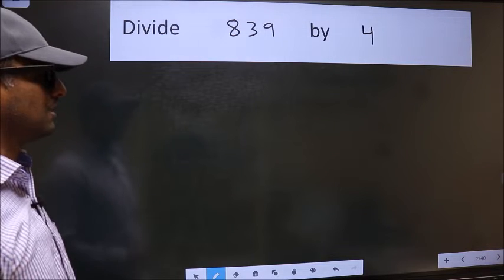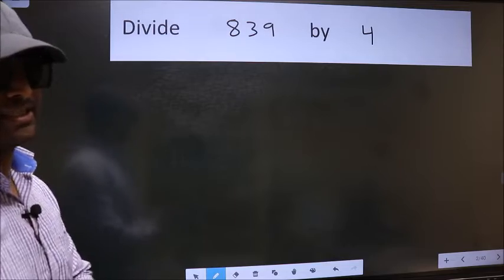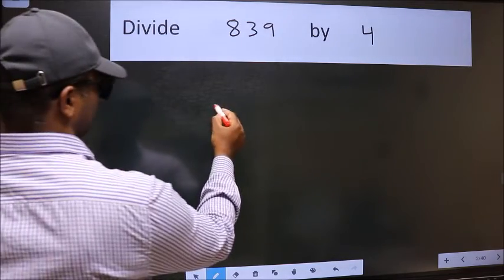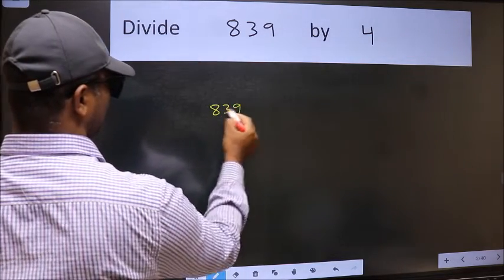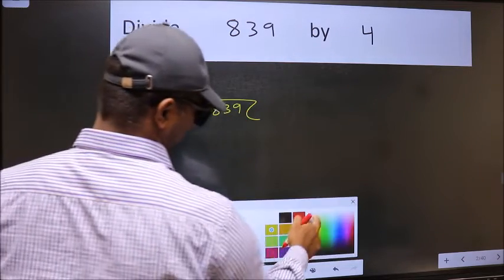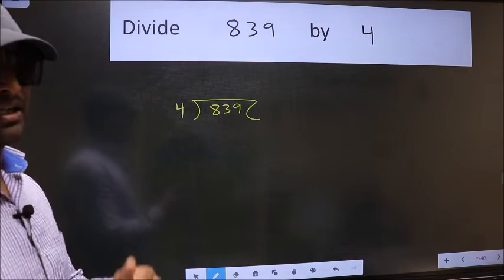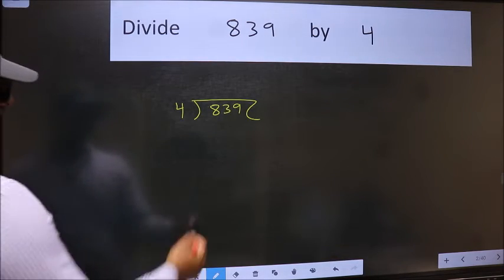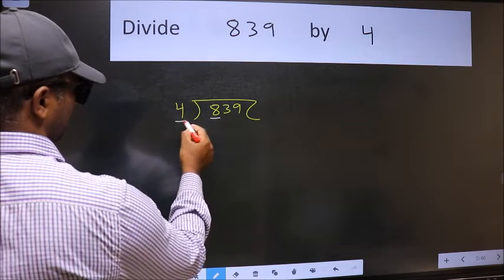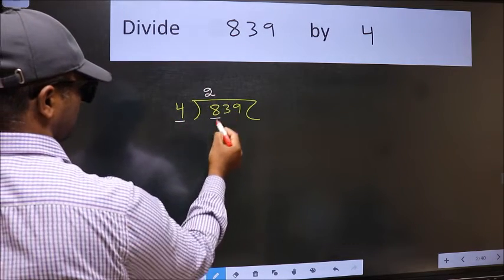Divide 839 by 4. To do this division, we should frame it in this way: 839 here and 4 here. This is your step 1. Next, here we have 8 and here 4. When do we get 8 in the 4 table? 4 times 2 is 8.